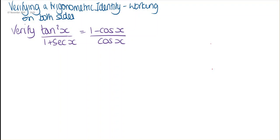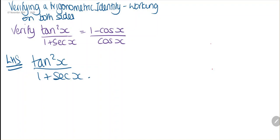We're verifying an identity and we have fractions on both sides, so we're going to try and work on both sides to simplify so we can show that the left hand side is equal to the right hand side. I'm going to start with the left hand side, and we have tan squared x divided by one plus secant x. Using Pythagorean identities — I'm just going to write this here.